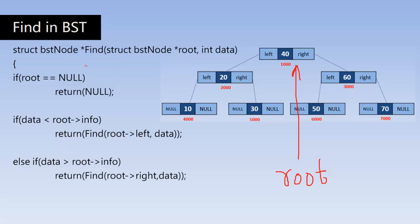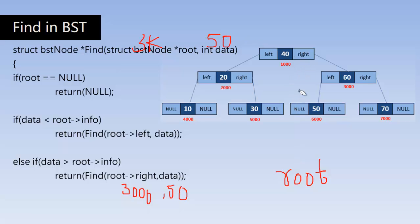Then I call this function again recursively by passing root arrow right. Root arrow right is the address of the right child, which is 3000. So I pass 3000 and data 50 to the function again. Now root is no longer pointing to the original node — it is pointing to the node at address 3000.